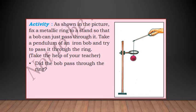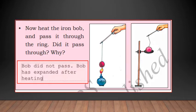Did the bob pass through the ring? No. First, in the first place it will not pass. Now heat the iron bob and pass it through the ring. Did it pass through? Why? The bob did not pass. Bob has expanded after heating. First when you pulled it inside the ring it passed. Second time when you heated it, it expanded. So now it will not pass.